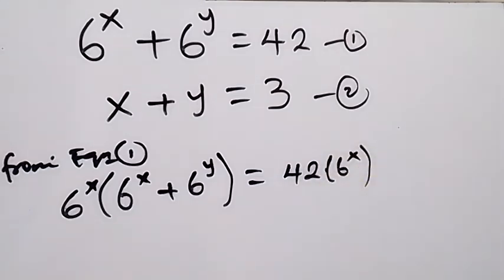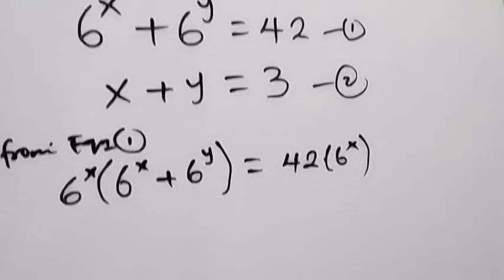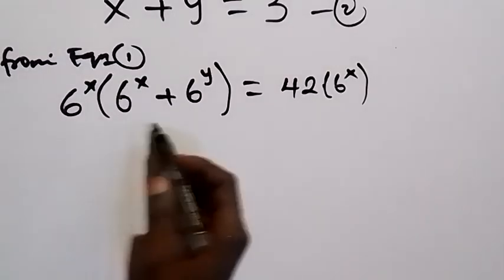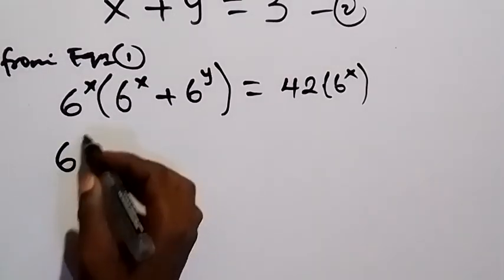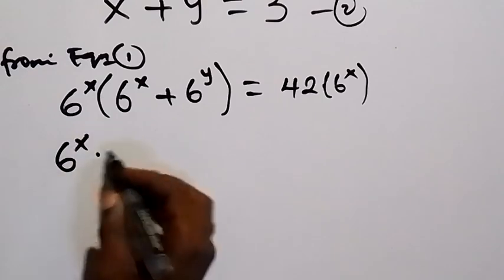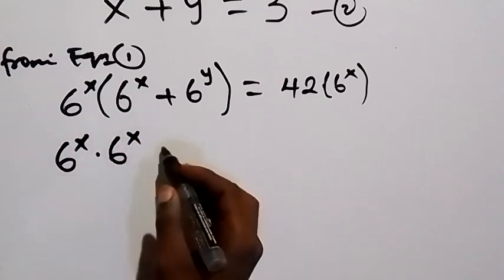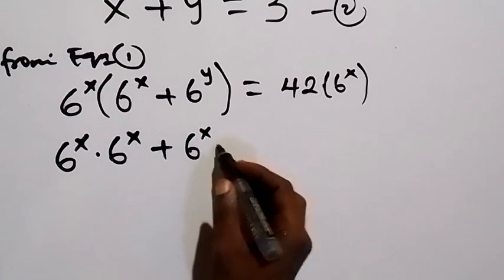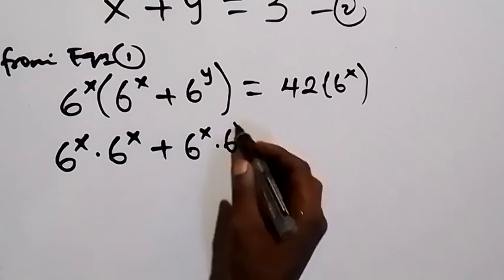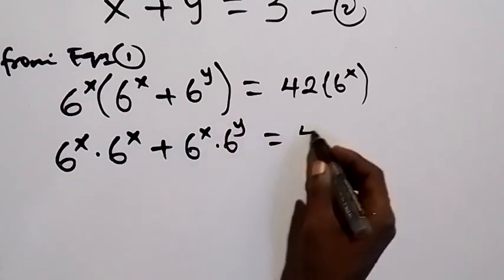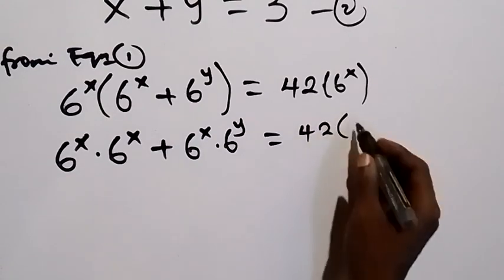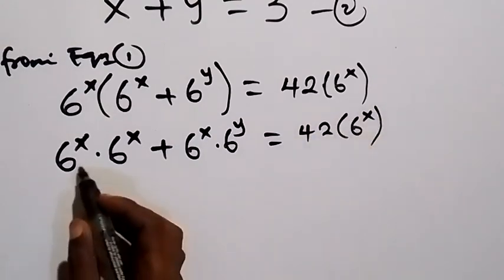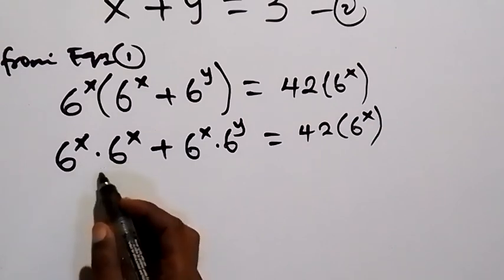From here we can use 6 raised to power x to expand this bracket. This gives us 6 raised to power x times 6 raised to power x, plus 6 raised to power x times 6 raised to power y, which is equal to 42 times 6 raised to power x.